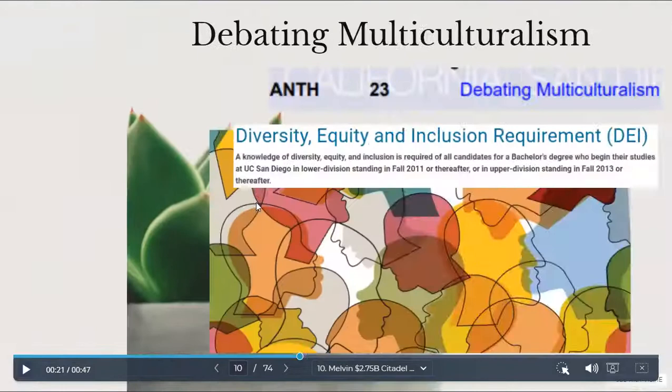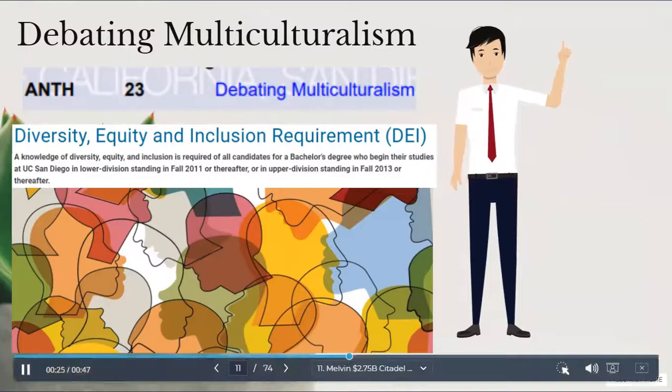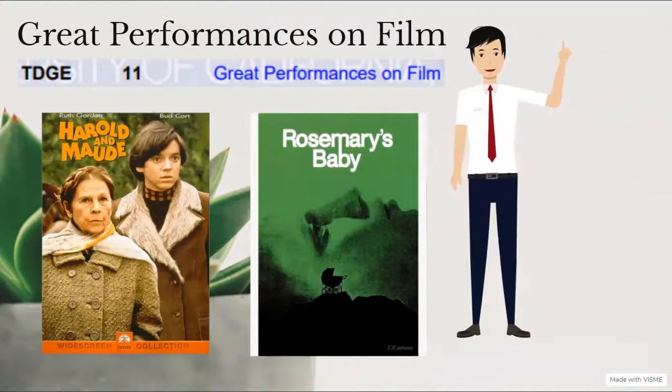In addition, one of the classes was Debating Multiculturalism. This course focuses on the debate about multiculturalism in American society. I took this course for my DEI requirement, which was a general education or GE requirement for all UCSD students. I decided to take this course to not only satisfy the DEI requirement, but also to balance out my course schedule with technical and major focused courses with GE courses. Another GE course I took was Great Performances on Film. This course examines major accomplishments in screen acting from films such as Harold and Maude and Rosemary's Baby. We would watch movies and have to take a quiz at the end of each lecture and write a couple essays analyzing two movies.